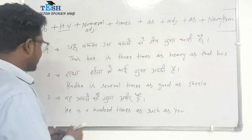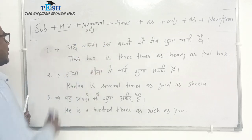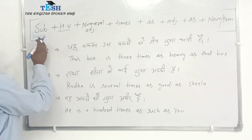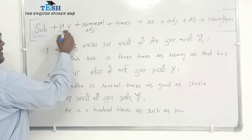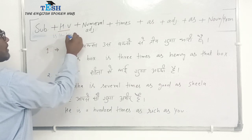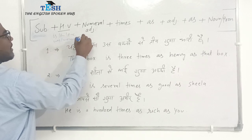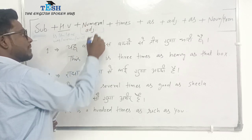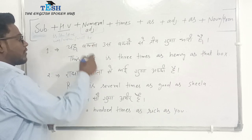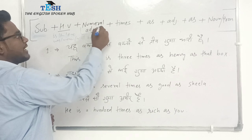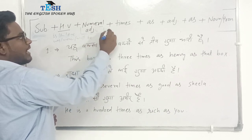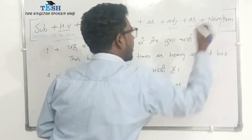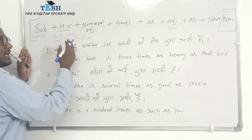Let's get started. First of all I would like to discuss the structure which you can see on this board. The subject can be: I, you, we, they, he, she, it, or a name. Then helping verb — that is based on the situation, whether the sentence is in the present, past, or future. The structure is: Subject + helping verb + number + times + as + adjective + as + noun or pronoun.